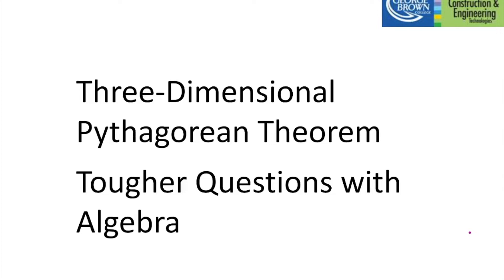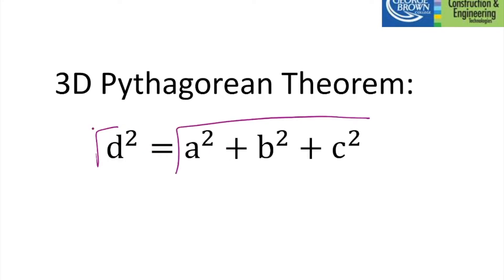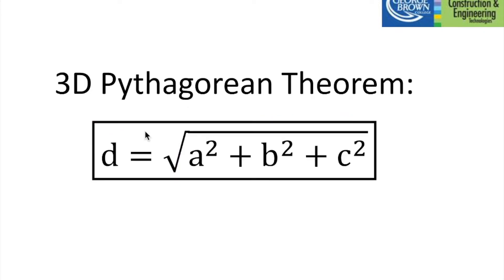Let's talk about the three-dimensional Pythagorean theorem, or 3D for short. It's given by the following equation. You have A squared plus B squared, and there's also a third dimension that gives us the D squared here. The way I like to write the 3D Pythagorean theorem is by square-rooting both sides — square root the left side and the right side — and those cancel because they're inverses.